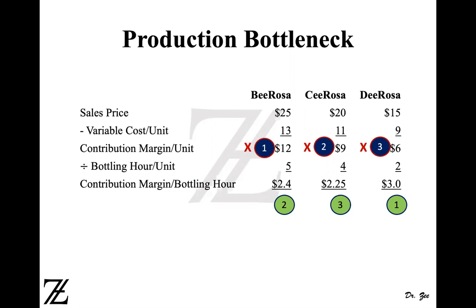The solution shows that B Rosa's sales price is $25, C Rosa is $20, and D Rosa is $15. Their variable costs per unit are $13, $11, and $9 respectively. So the contribution margin for B Rosa is $12, C Rosa is $9, and D Rosa is $6. If management doesn't know about the production bottleneck, they are going to end up producing B Rosa first and selling B Rosa first, because it seems that B Rosa gives the highest contribution margin per unit at $12, while D Rosa gives only $6.